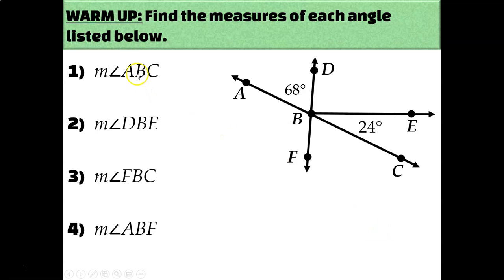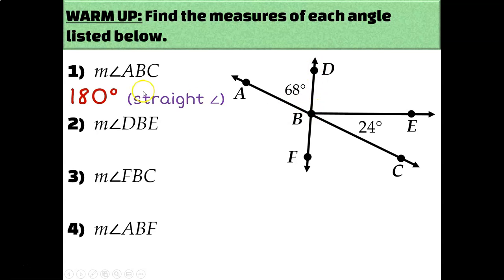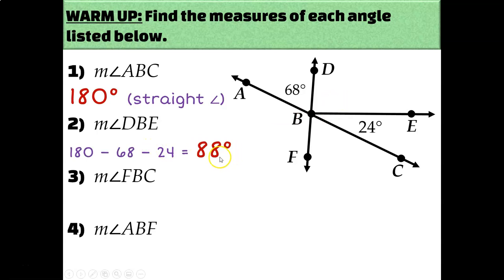Let's see how you did. The measure of angle ABC is just a straight line, and we know that straight angles measure 180 degrees. The measure of angle DBE can be found using the angle addition postulate: 68 plus the measure of angle DBE plus 24 equals 180 degrees. Solving that equation, we find that the measure of angle DBE is 88 degrees.